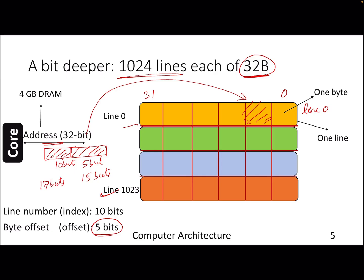The cache should not respond with data mapped to some other address. If the processor is demanding for data stored at address x, the cache must make sure it is sending data for address x and not x minus delta. So it has to make sure the rest of the 17 bits also match. Those 17 bits are stored in the cache and compared with the 17 bits coming from the processor.